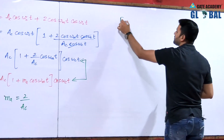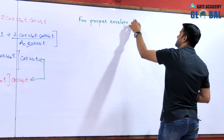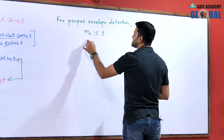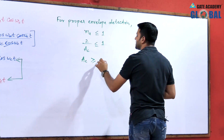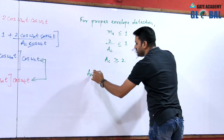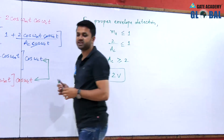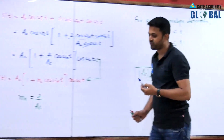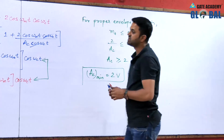For proper envelope detection, the modulation index must be less than or equal to 1. So 2/ac ≤ 1, which means ac ≥ 2. We have to find the minimum value of ac, so the minimum value of carrier amplitude is 2 volts — it can be equal to 2. According to the options, the correct answer is option A.